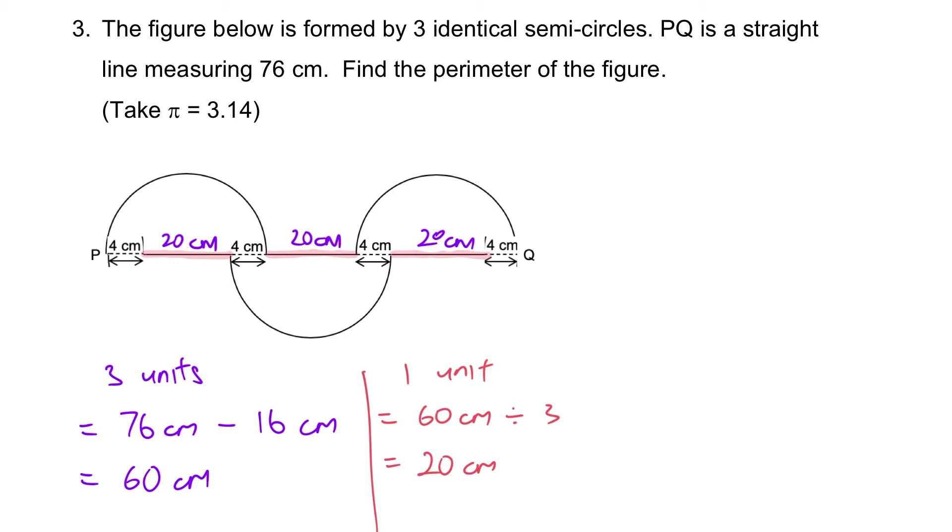Are we able to figure out the diameter of a semicircle? Yep, 4 + 20 + 4, so the diameter will be 28 centimeters.